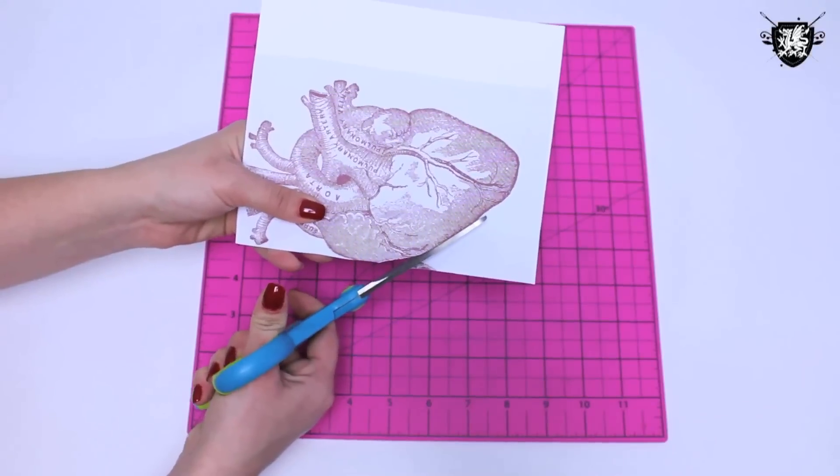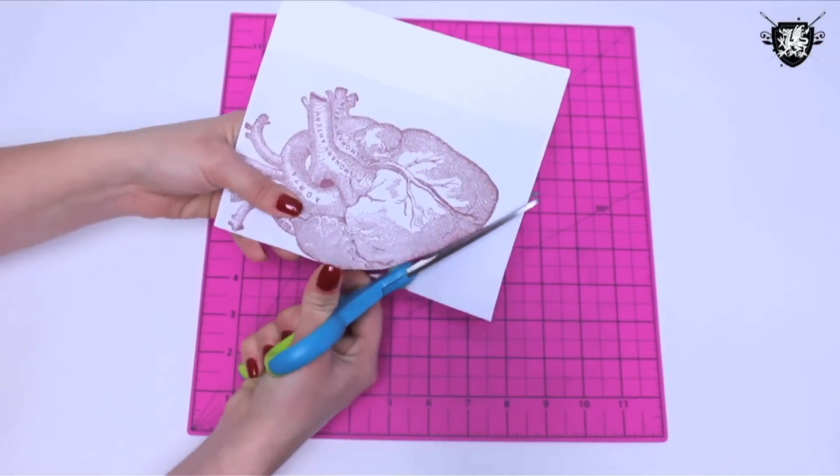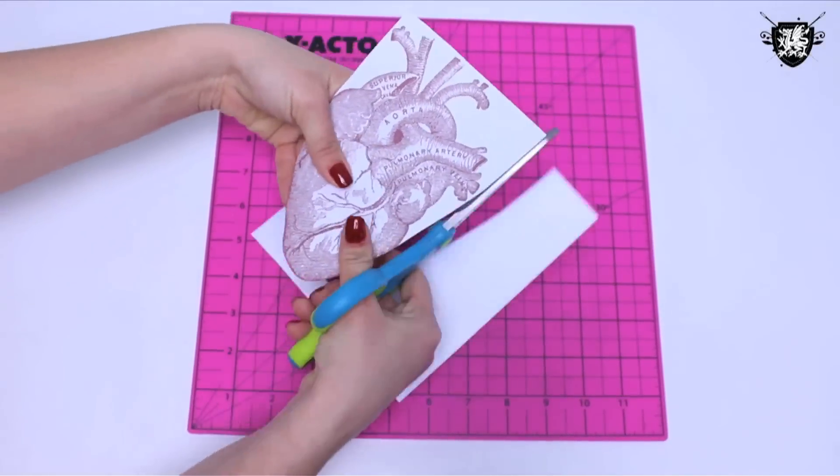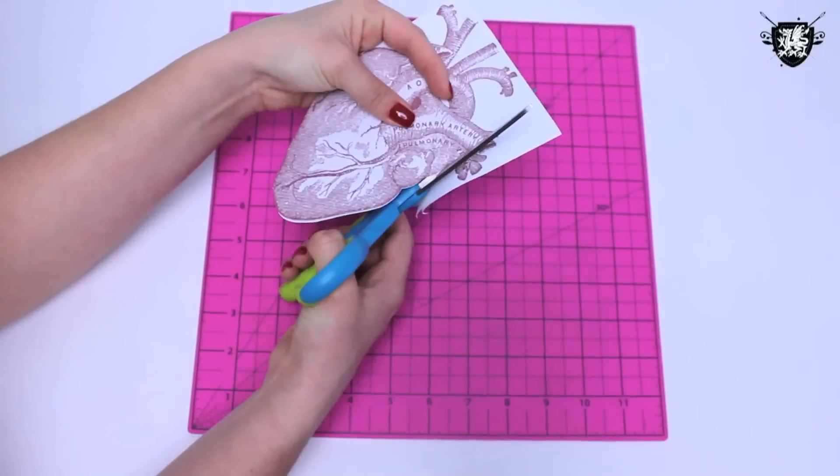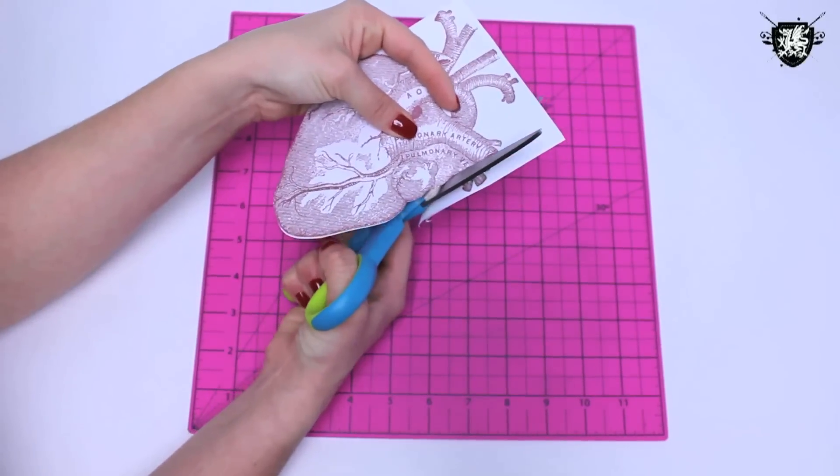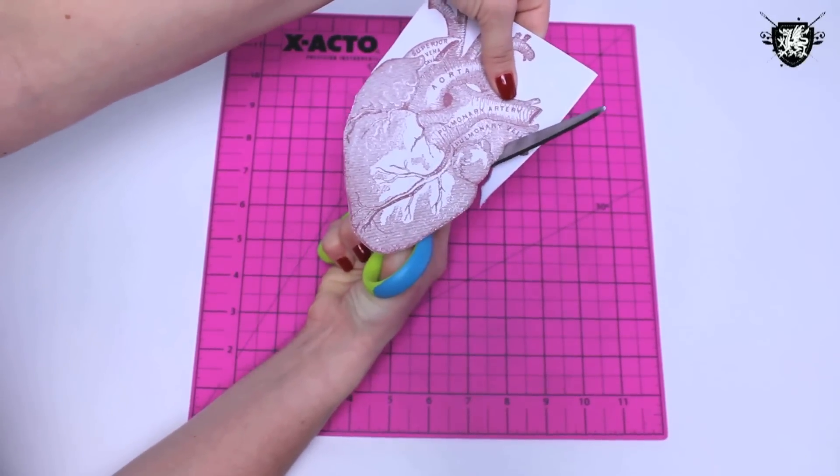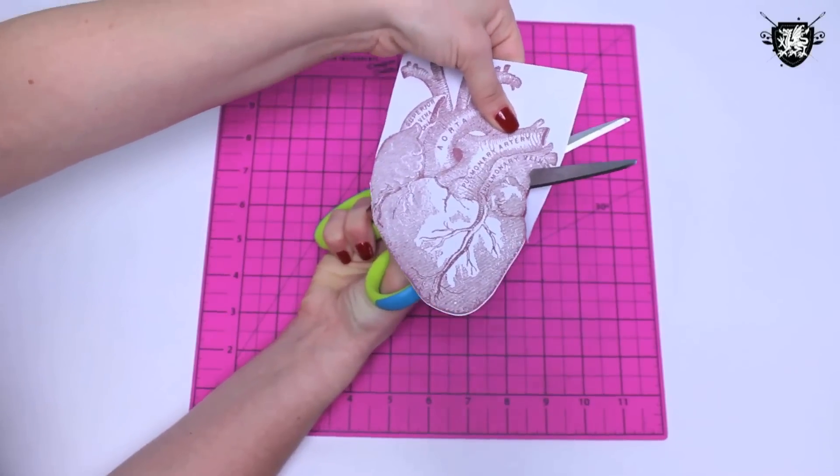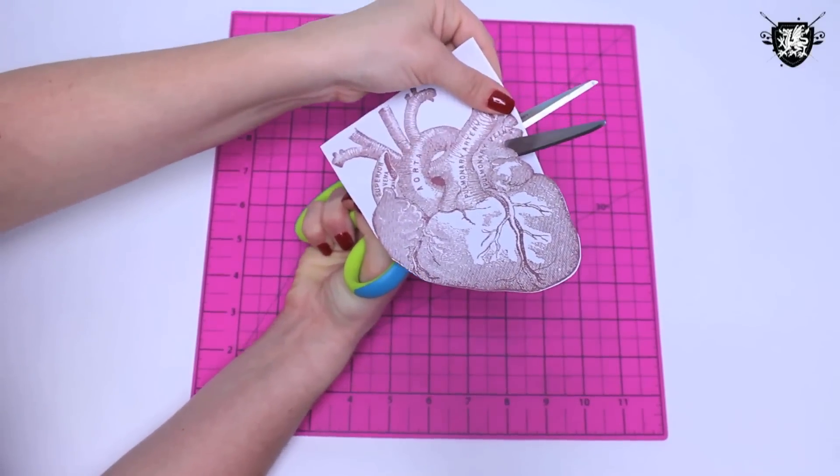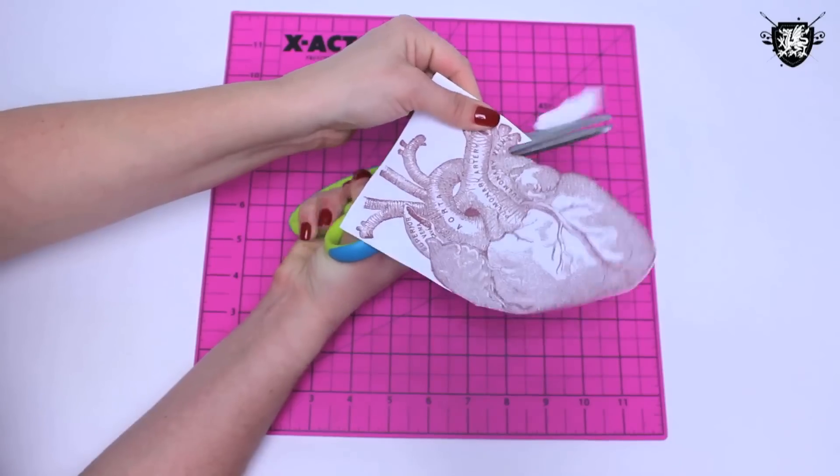Then take your time cutting along the outline of the image. I find it helps to turn the image as you cut, getting into the turns all the way with your scissors, keeping them open as you turn, and cutting when the scissors are in the direction of where you want to cut. Does that make sense?